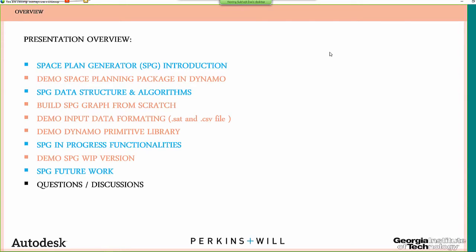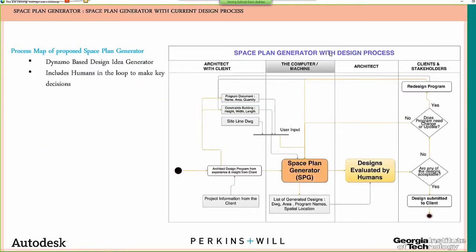This is a rough process map I built when I was starting on the Space Plan Generator project. My idea was that Space Plan Generator would be a system sitting in Dynamo, getting project data information from the architect or designer and generating design options in the form of massing of programs, departments, or very early-stage stacking of blocks on the site — just to show different ideas of how the project can be realized.